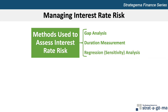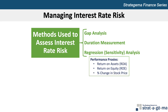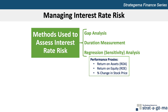Gap analysis and duration analysis are based on the bank's balance sheet composition. Alternatively, a bank can assess interest rate risk by determining the sensitivity of its performance to interest rate movements over time. Common proxies for performance include return on assets, return on equity, and the percentage change in stock price. To determine how performance is affected by interest rates, regression analysis can be applied to historical data.